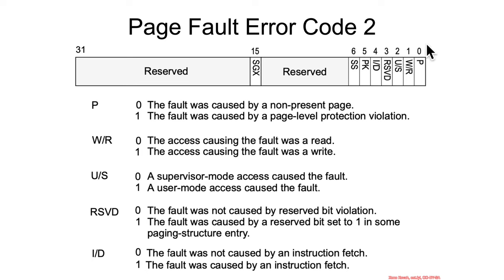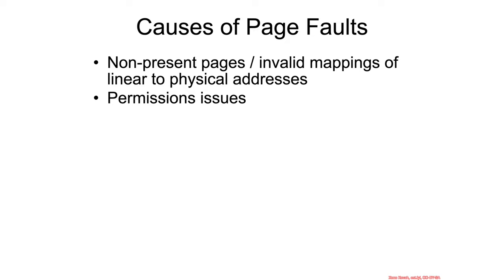The reserve bit we don't care about. The ID bit indicates whether or not this was an instruction fetch or a data fetch. As indicated by bit 0, there are two primary causes of page faults: straight-up non-present pages, which could be due to invalid mappings, and then there are permissions issues.